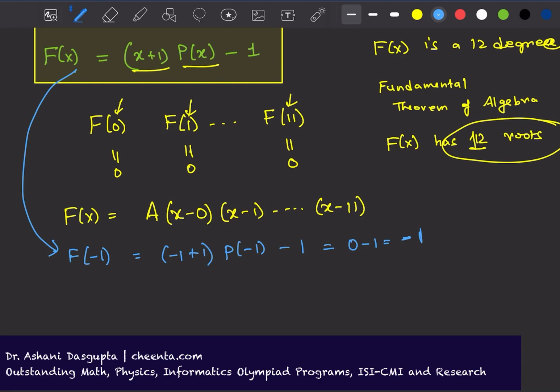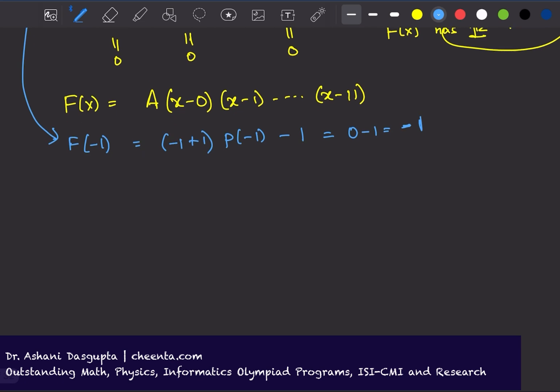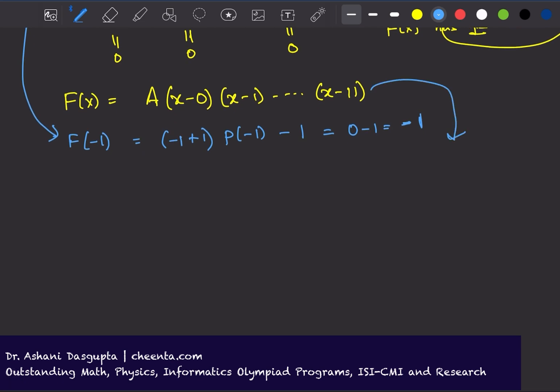I will calculate it one more time in this expression. Here, F(-1) is A times (-1)(-1-0)(-1-1) up to (-1-11).